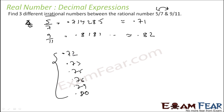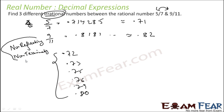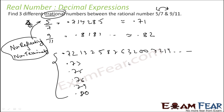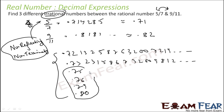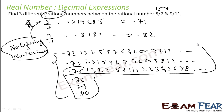But we have to find irrational numbers. Those terminating examples are all rational numbers. To make a number irrational, it must be non-repeating and non-terminating. So we add digits that don't repeat — for example: 0.7123785632007219... with the dots indicating continuation. We can similarly construct three such non-repeating, non-terminating numbers between 5/7 and 9/11 as our three irrational numbers.